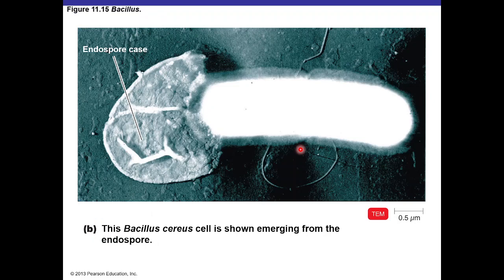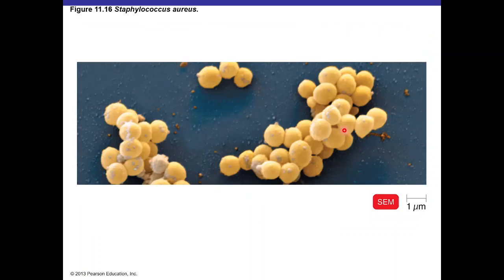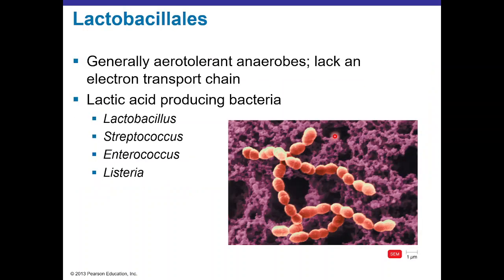A transmission electron micrograph shows Bacillus cereus emerging from an endospore — the endospore case and the rod are visible. A scanning electron micrograph enhanced with color shows Staphylococcus aureus as a cluster of spheres producing a yellow pigment.